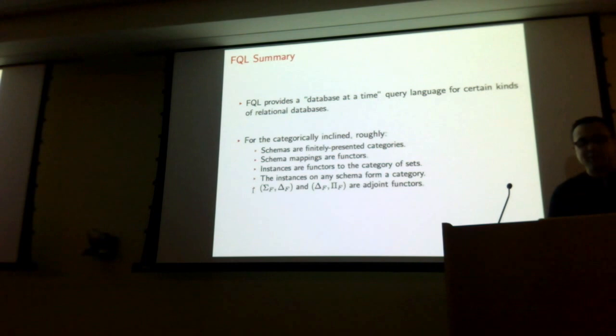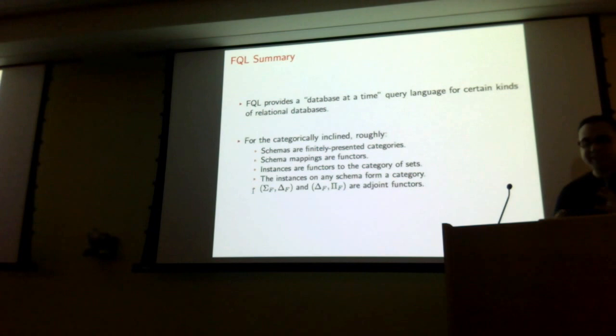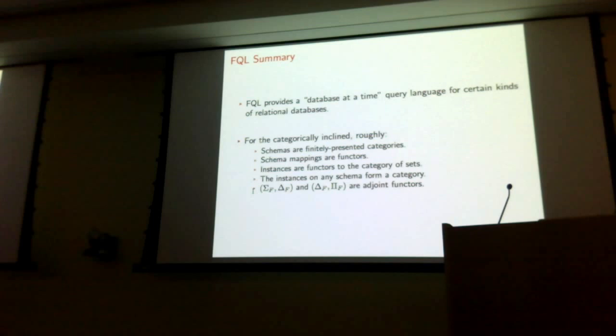For the categorically inclined: using the math, schemas are finitely presented categories and schema mappings are just functors. Instances themselves are functors to Set, and the instances on any schema form a category. What we have are sigma and delta: a left adjoint pair, and delta and pi forming a right adjoint pair. That's the motivation for this language.